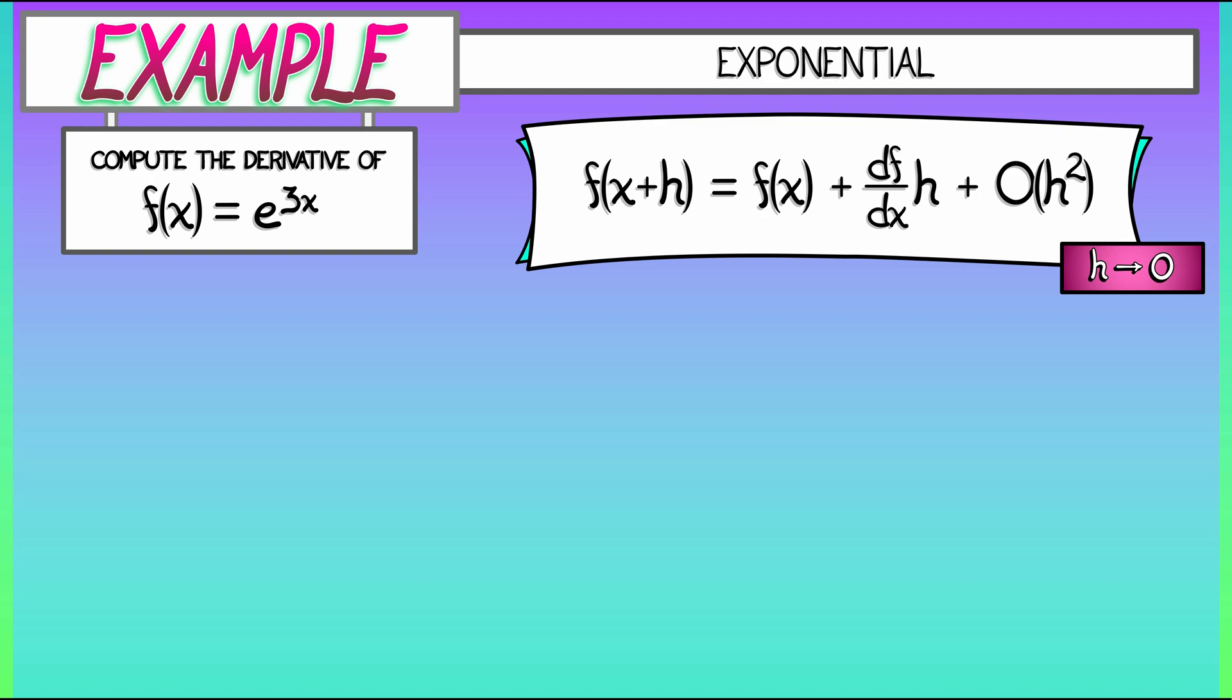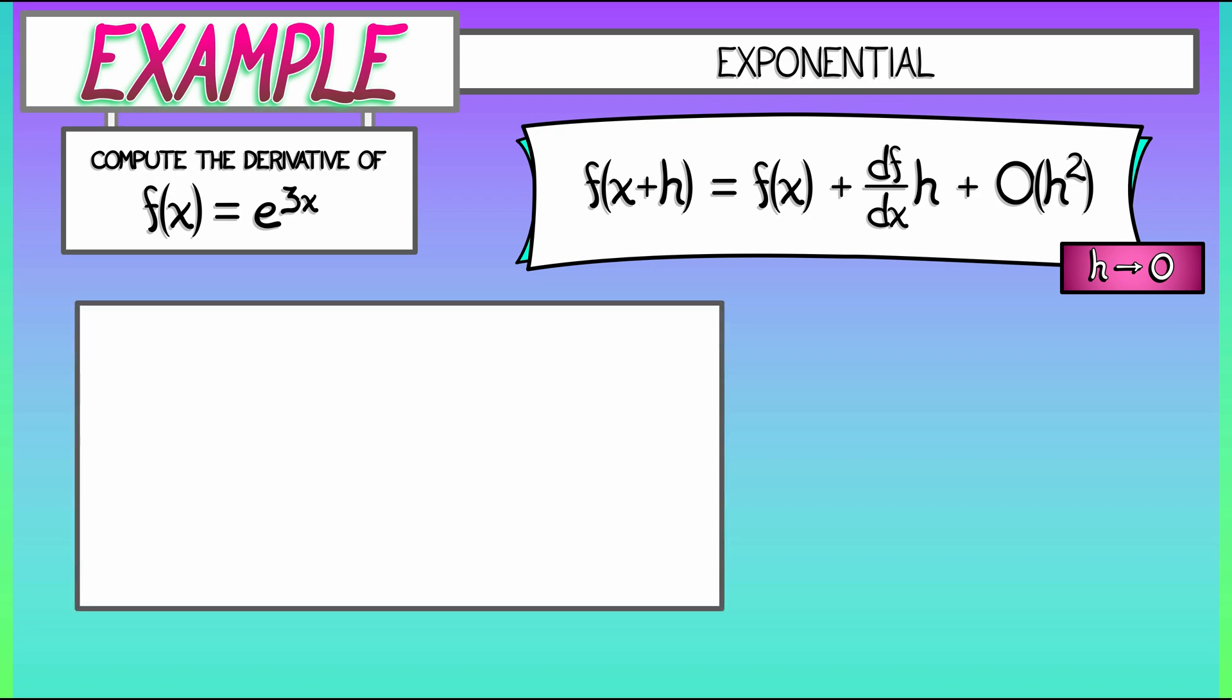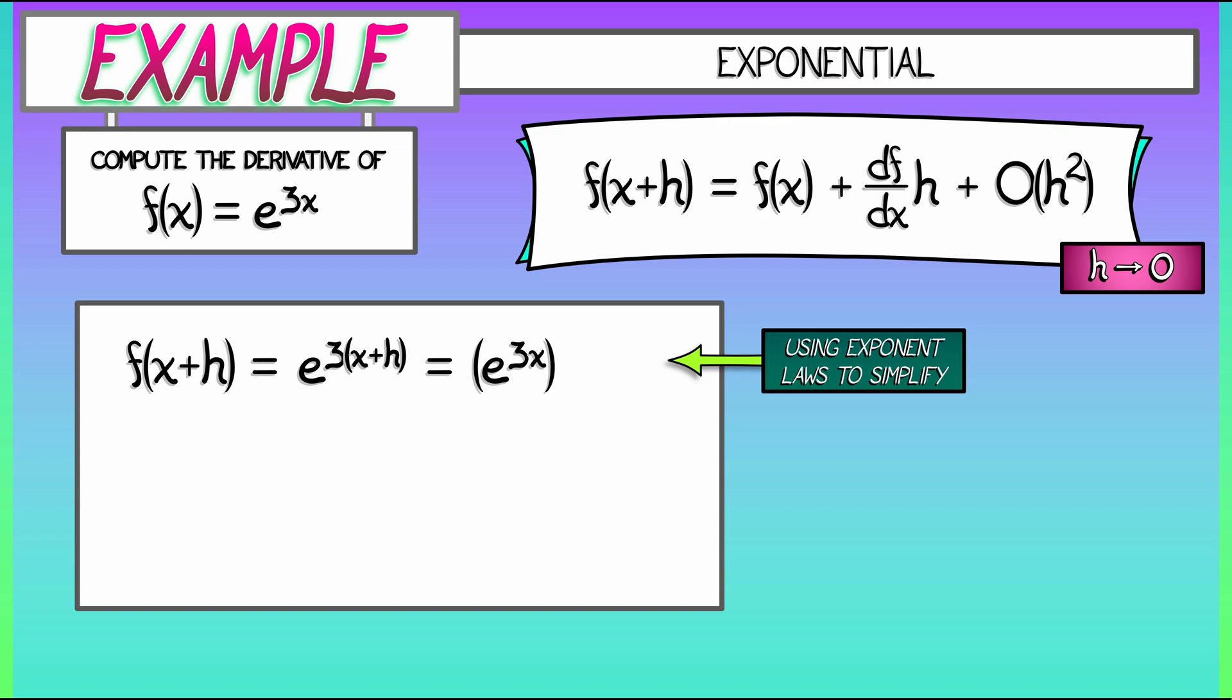So, going back to our function e to the 3x, let's consider what happens when we replace x with x plus h. That gives us e to the 3 times quantity x plus h. Our next step is to use exponent laws to break this up as e to the 3x times e to the 3h.